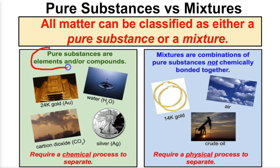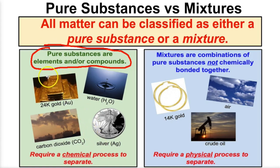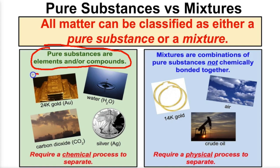What are pure substances? Pure substances are either elements or compounds. If you're one of the 115 or so elements from the periodic table, you're a pure substance. And if you're one of the millions of different types of compounds, then you're also going to be a pure substance.